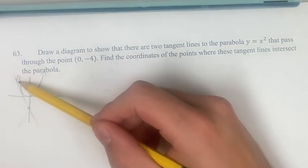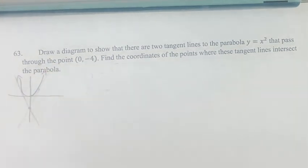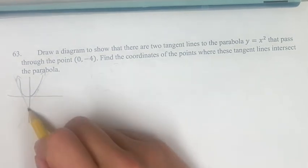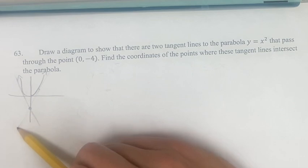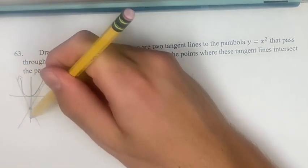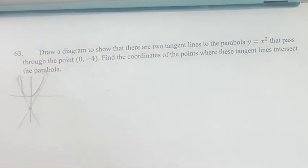So we have the graph right here. This is just the general form of a parabola y equals x squared. It doesn't have to be super accurate. We have this point down here on the y-axis representing (0, -4). You can see that we have this line and this line that are both tangents to the graph.